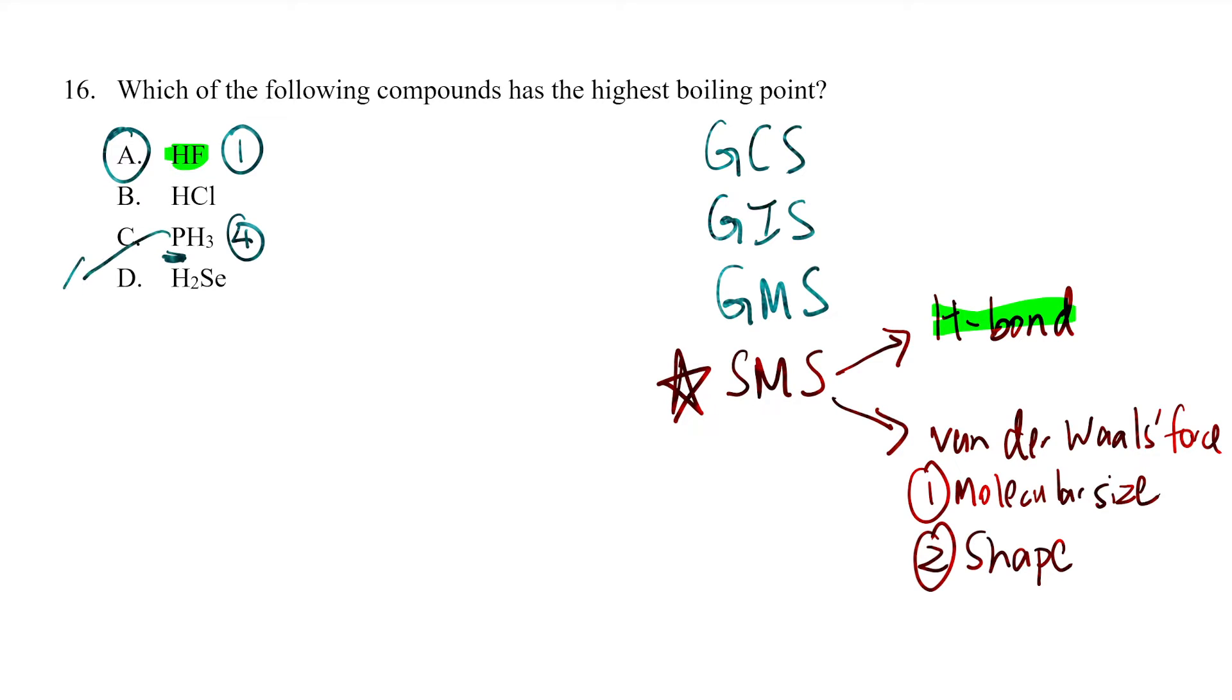Chlorine has 17 electrons, and selenium is below sulfur with 34 electrons. The one with selenium, H2Se, will have the largest molecular size.